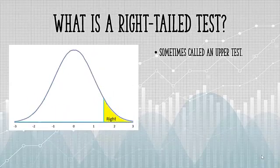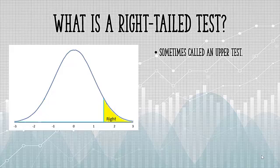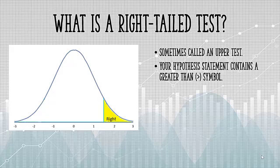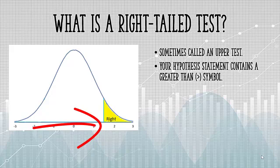Let's take a look at a right-tailed test. This is sometimes called an upper test. That's because it's in the upper end of the distribution with respect to the number line. For a right-tailed test, your hypothesis statement contains a greater than symbol. Notice on the number line how the numbers get bigger or greater as you head towards that right tail.